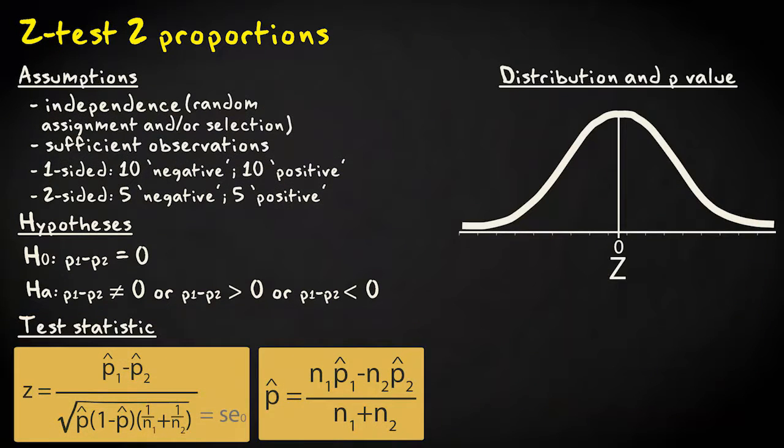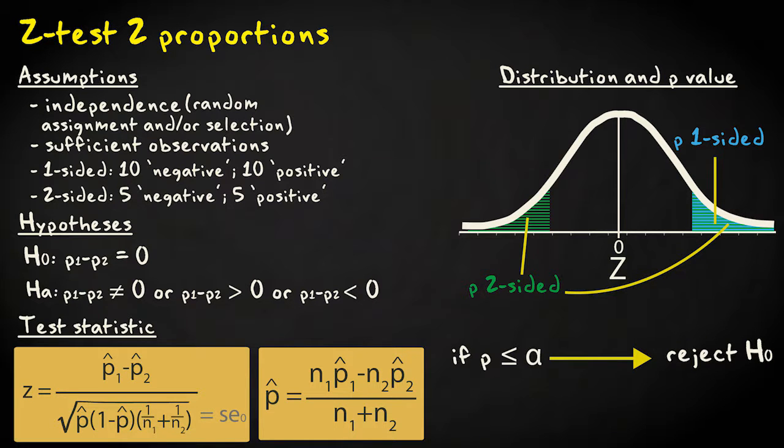The test statistic has a standard normal distribution. One-sided or two-sided p-values are easily determined using software or a table. If the p-value is smaller or equal to the predetermined significance level, we reject the null hypothesis. If it's larger, we fail to reject the null.